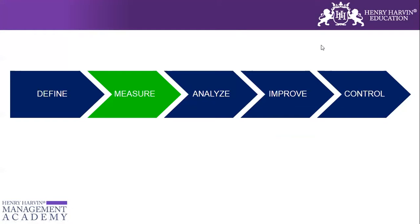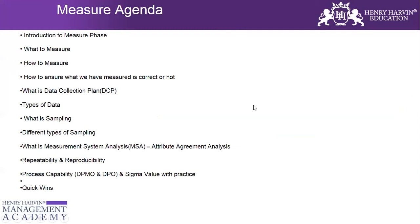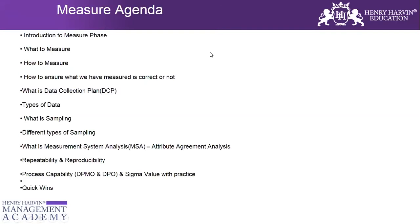There is an agenda for the Measure phase of Six Sigma. We're going to talk about what is the introduction to the Measure phase and what it is typically all about. Then there are certain things we need to keep in mind — like what to measure, how to measure, and how to ensure what we have measured is correct or not. Then we have the data collection plan, types of data, and what is sampling.